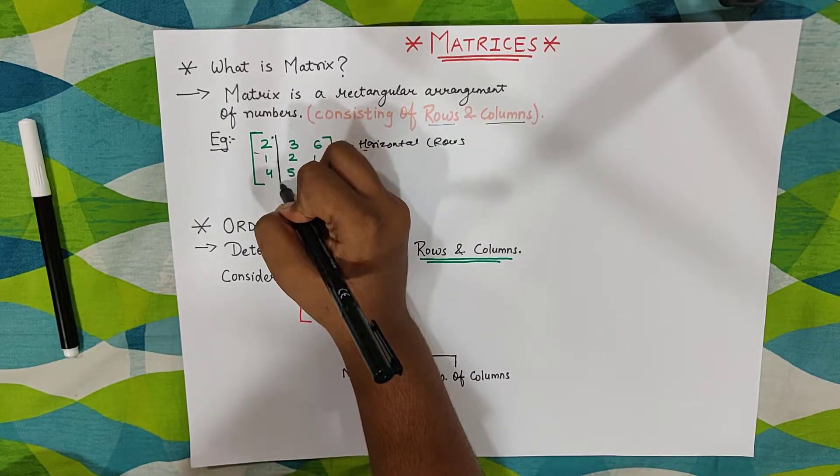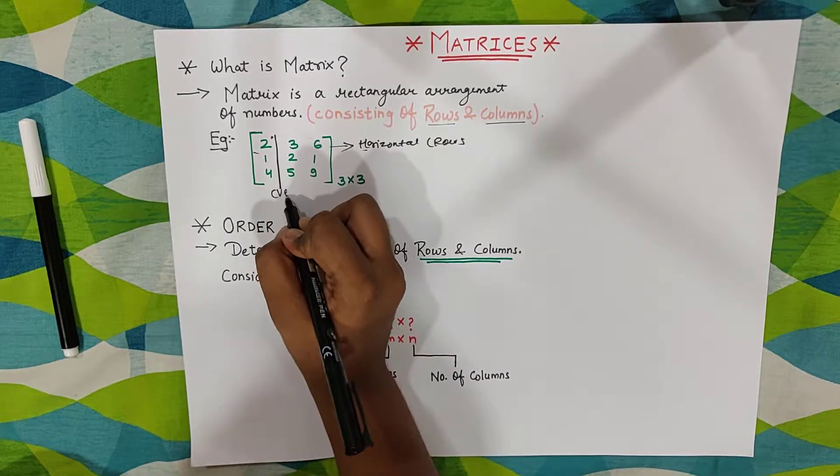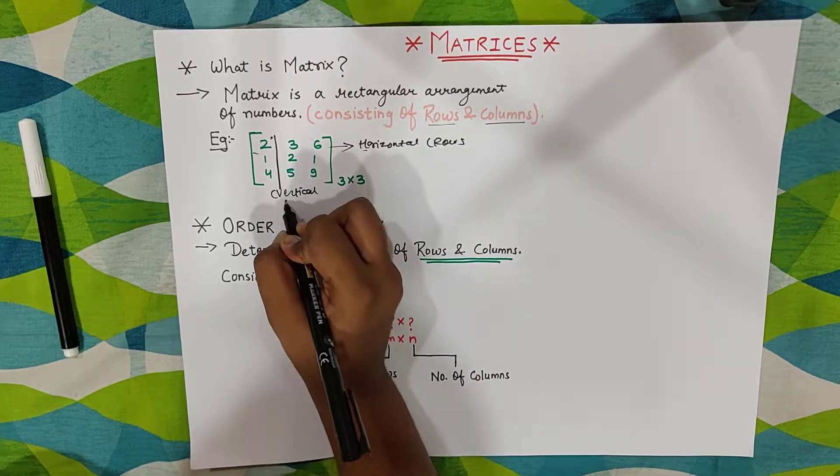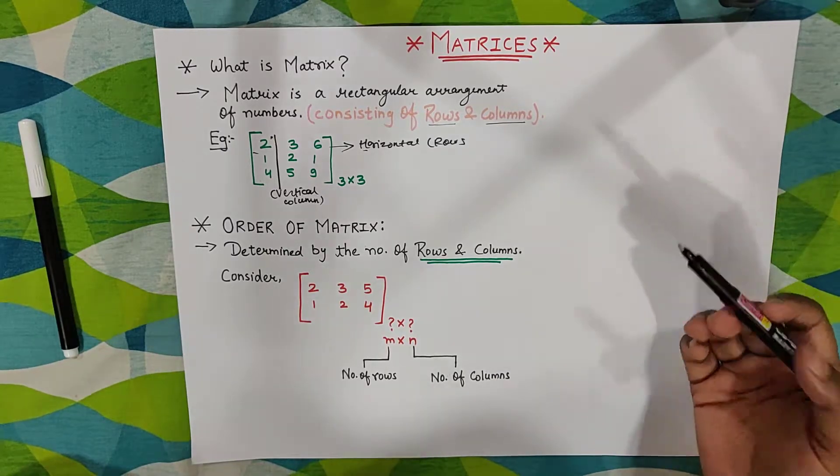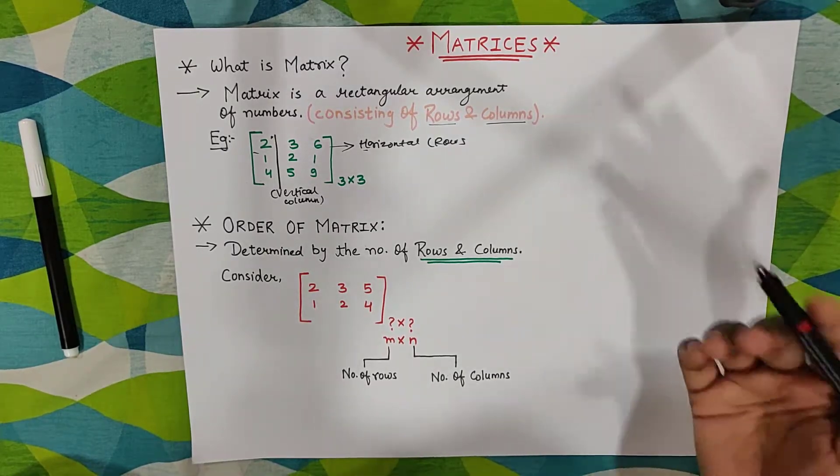And when we talk like this way, that is vertical way, so it becomes columns. So this is the arrangement of rows and columns. This is the matrix.